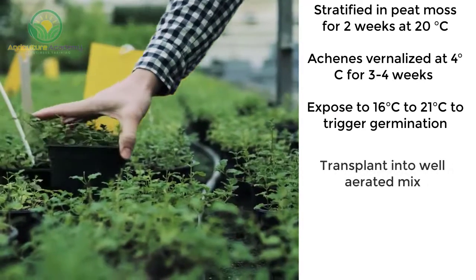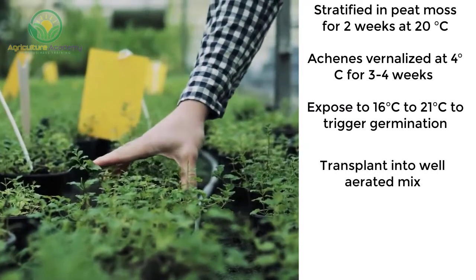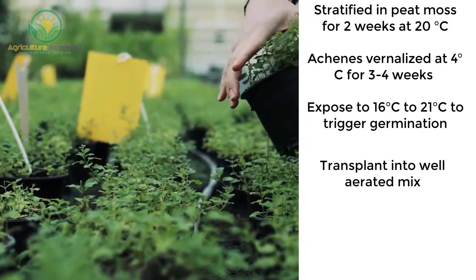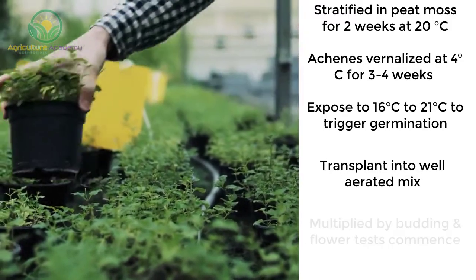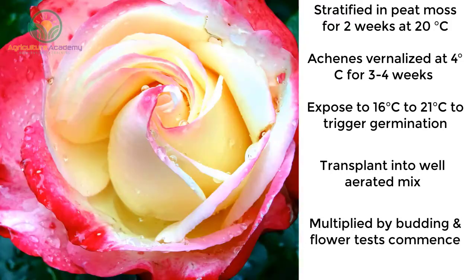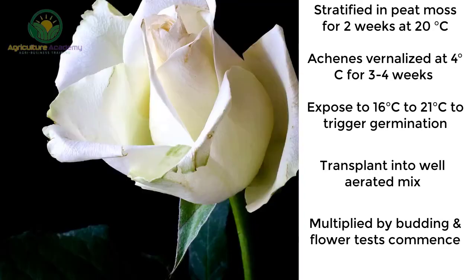The young seedlings are transplanted into a well-aerated mix. The new cultivars are multiplied via budding and flowering tests commence. Cultivars can then be named and patented, the rights of which last up to six years.